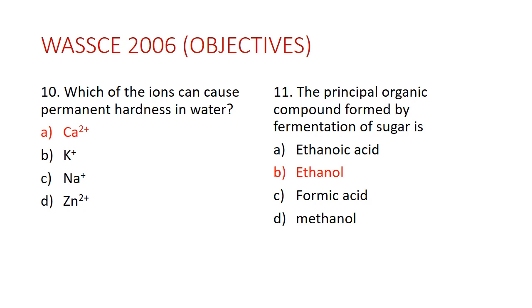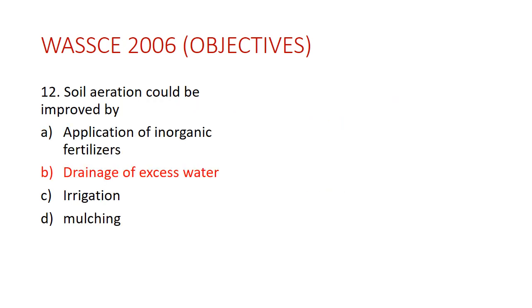Question eleven: the principal organic compound formed by fermentation of sugar is ethanol. Question twelve: soil aeration could be improved by A) application of inorganic fertilizers, B) drainage of excess water, C) irrigation, D) mulching. The answer is B — drainage of excess water. Draining excess water allows air to circulate within the soil, which is crucial for plant growth.